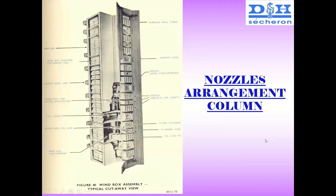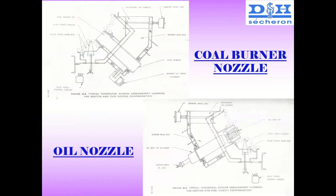This is a typical section view of a boiler. Here you can see this is the furnace wall, and this is the whole nozzle compartment. Let us see the actual picture — another view of a coal nozzle burner tip.